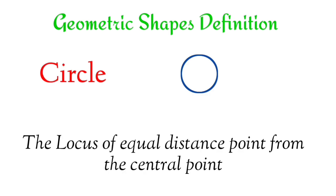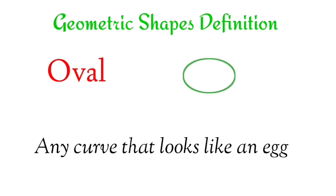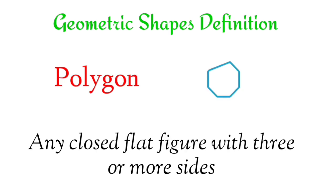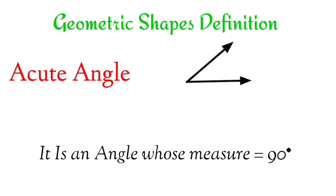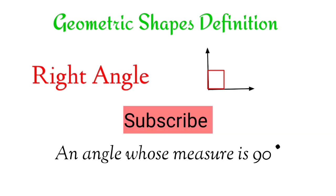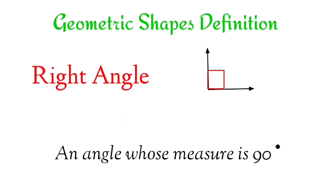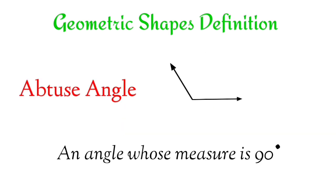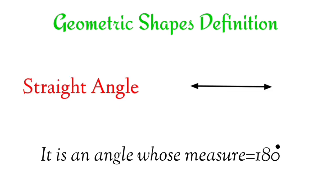Circle: The locus of equal distance points from the central point. Oval: Any curve that looks like an egg. Polygon: Any closed flat figure with three or more sides. Acute angle: It is an angle whose measure is less than 90 degrees. Right angle: An angle whose measure is 90 degrees. Obtuse angle: An angle whose measure is greater than 90 degrees. Straight angle: It is an angle whose measure is 180 degrees.